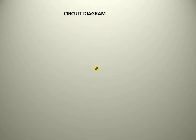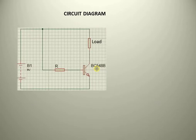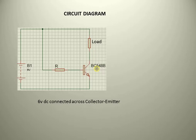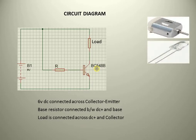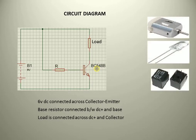Circuit diagram. This is a circuit diagram of the transistor working as a switch. A 6V DC is supplied across the collector and emitter of the transistor. The base resistor is connected between the positive terminal and the base of the transistor. The load is connected across the positive and the collector terminal, and the load can be a motor, an LED, or a relay.